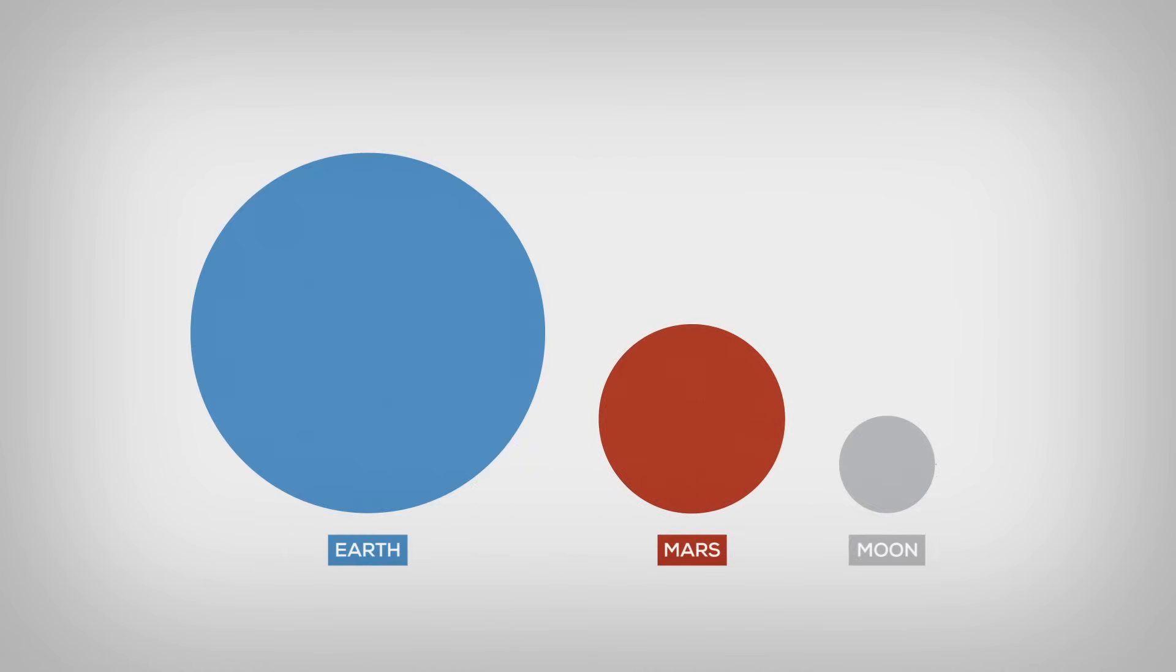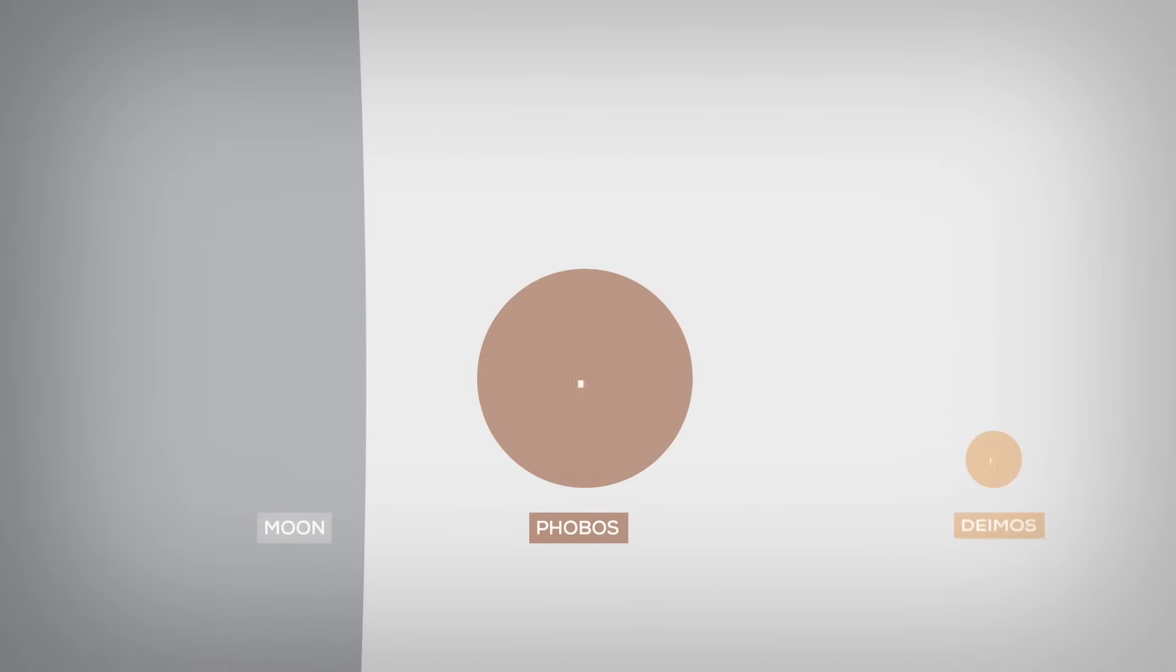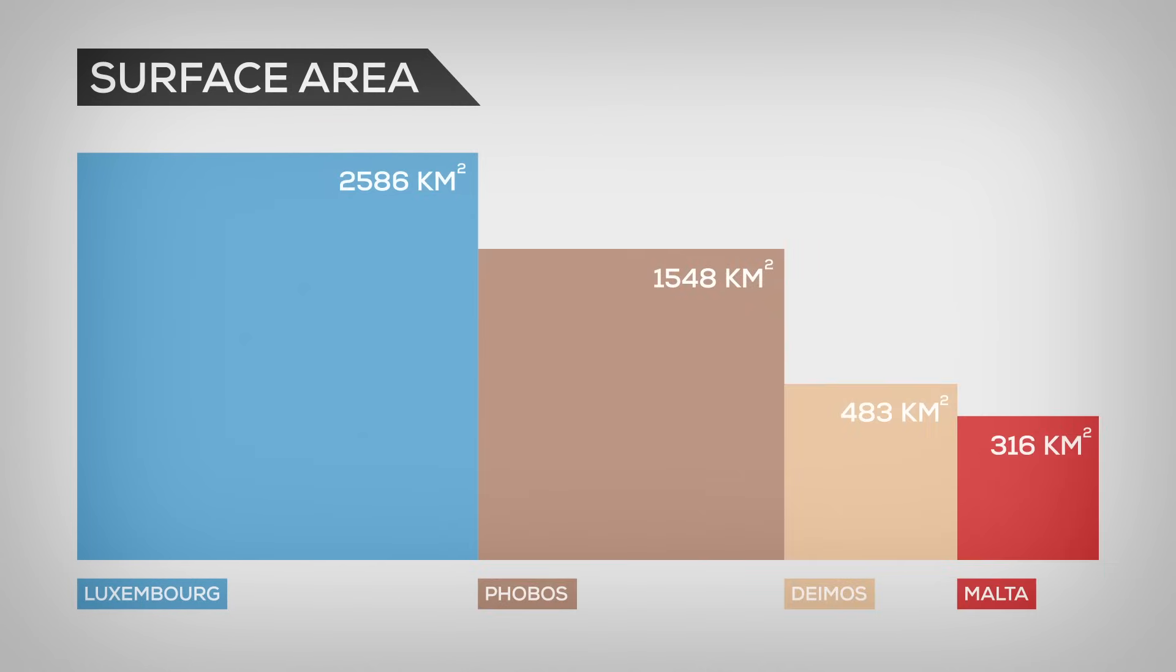Compared to Mars or our own moon, pretty tiny. Although tiny is a matter of opinion. Their surface areas are close to some of the smallest states on Earth, like Luxembourg and Malta.